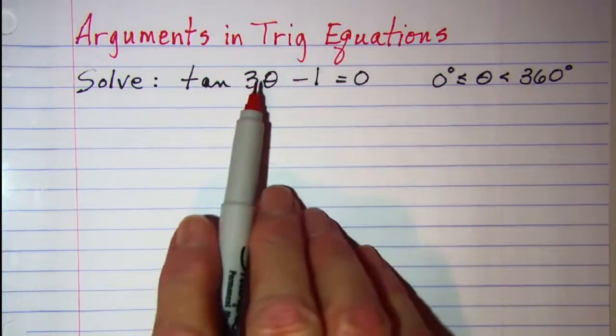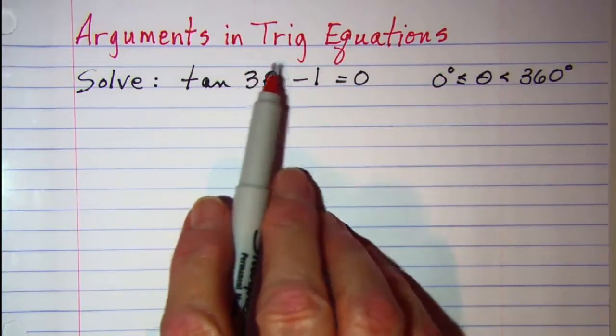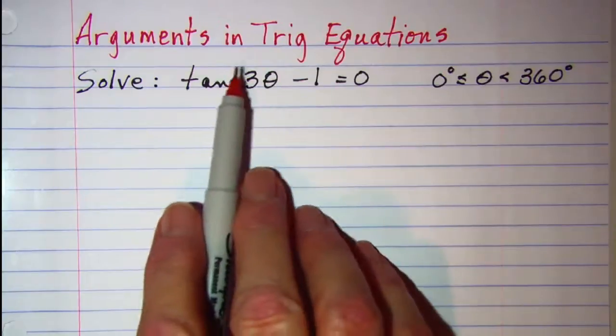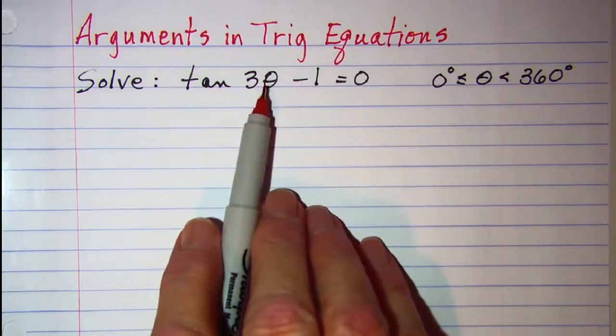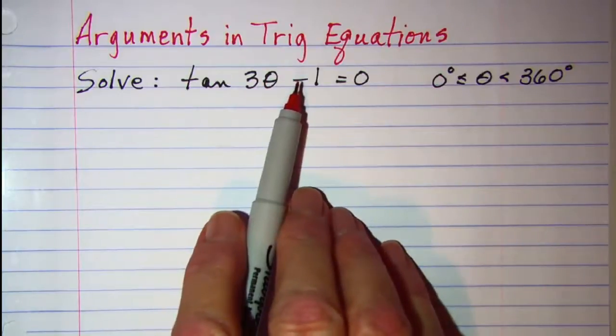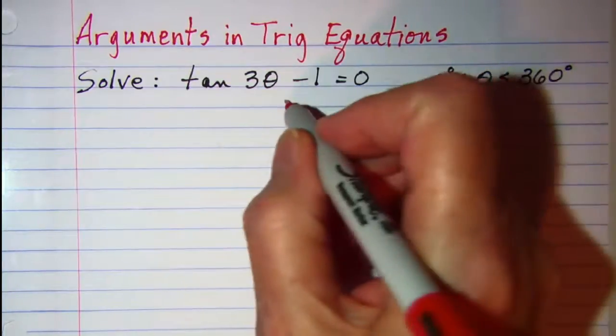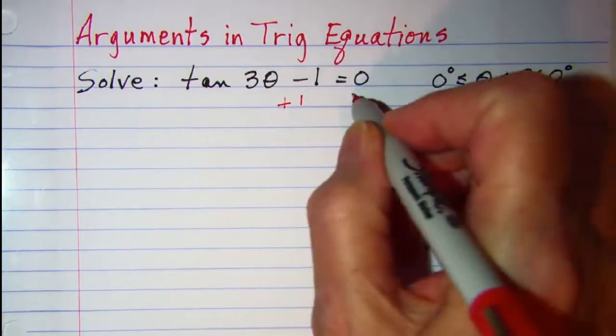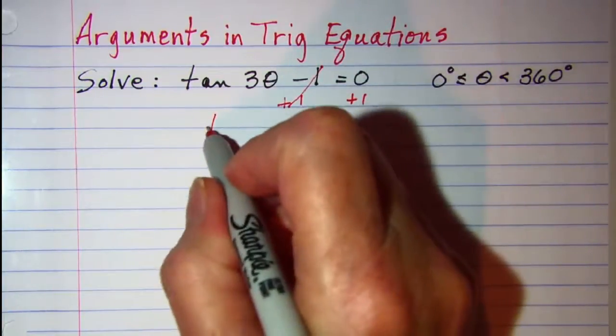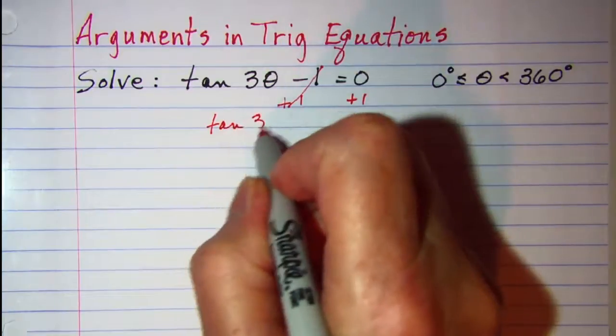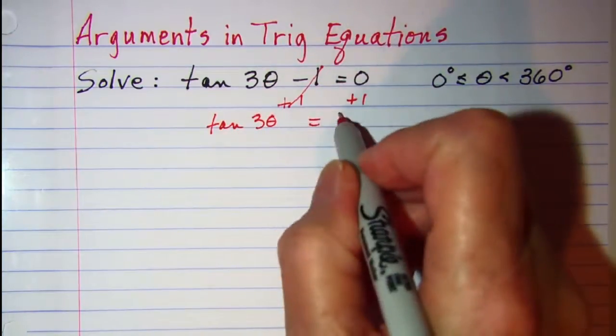Our argument of our tangent function, we can't touch that until it's isolated, until we have it by itself. So our first thing to do is to add 1 to both sides, and these will cancel, and we have tangent 3θ is equal to 1.